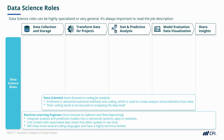Next up, we have a machine learning engineer. The difference here is that the coding they're doing is more focused on software and data engineering. They're integrating the analysis and predictive models into real-world systems, apps, or websites, linking models with automated data feeds, and they'll probably know several coding languages and have a highly technical skill set.